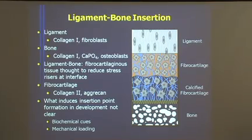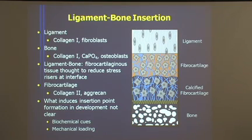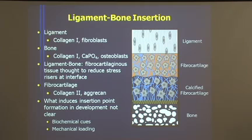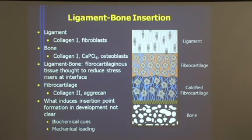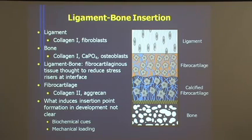In particular, our lab is focusing at the moment on the ligament to bone insertion. This is a very unique zonal organization of tissues that occurs between the fibrous ligament, which is very strong in tension, and this calcified and much stiffer bone. To compensate for this, in many areas of the body, there has been the development of this particular insertion point that has a fibrocartilaginous region.